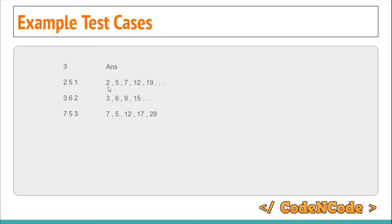If we take the starting two elements as 2 and 5, the series would look like: 2, 5, 7, 12, 19, and so on. So index 1 is the second element, which is 5. I'll simply increment n to convert to 1-based indexing, so the answers are 5, 9 (third term), and 17 (fourth term). We will work with a 1-based index system.